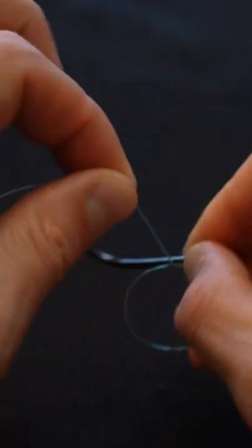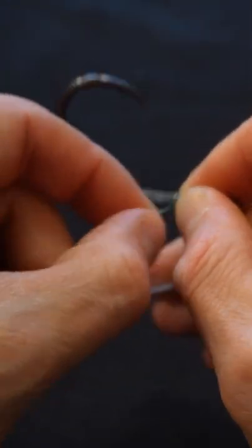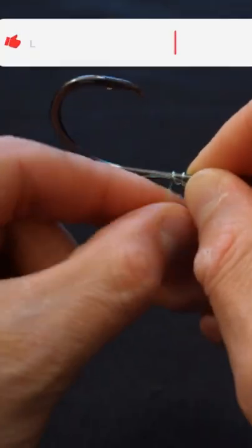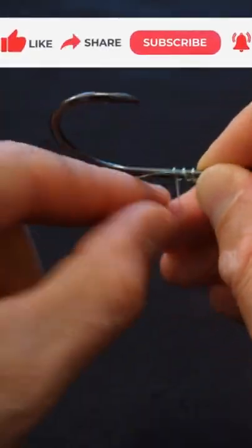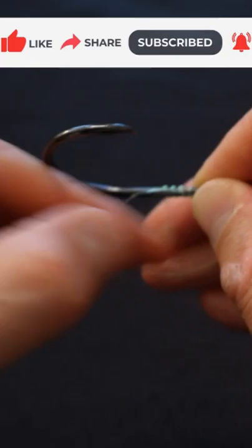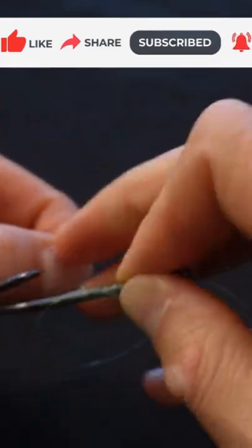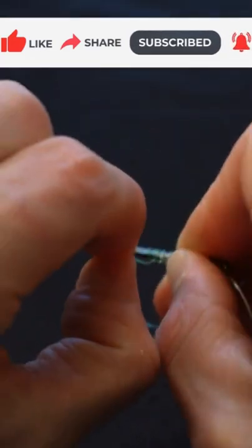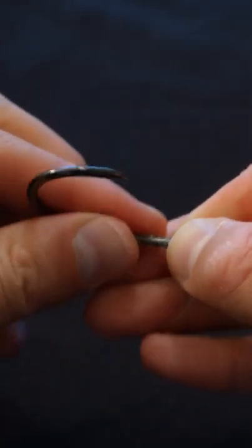Now you're going to take this line, you're going to make your wraps around the line and the shank of the hook and this is the uni knot. So again, five to seven wraps is perfect. That's five right there. We'll do six just for good measure and there you have it.